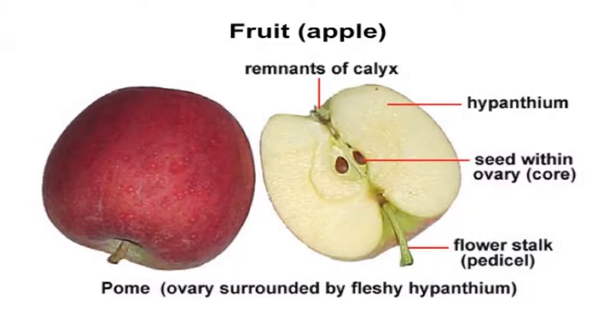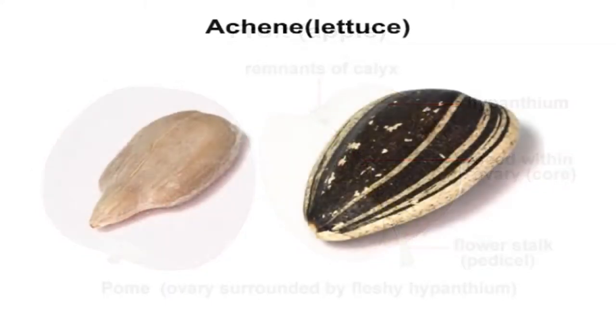Fruit is strictly the ripened ovary of a plant and its contents. More loosely, it is a term extended to the ripened ovary and seeds together with any structure with which they are combined — for example, apple, which is a pome with a fruit core surrounded by fleshy tissue derived from the floral receptacle. Achene is a small, usually single-seeded dry indehiscent fruit — for example, lettuce, sunflower, etc.